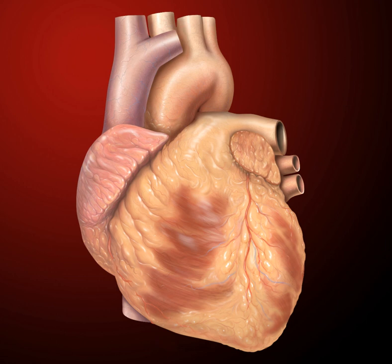The heart has four valves, which separate its chambers. One valve lies between each atrium and ventricle, and one valve rests at the exit of each ventricle. The valves between the atria and ventricles are called the atrioventricular valves. Between the right atrium and the right ventricle is the tricuspid valve. The tricuspid valve has three cusps, which connect to chordae tendinae and three papillary muscles named the anterior, posterior, and septal muscles, after their relative positions.